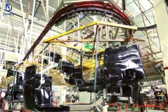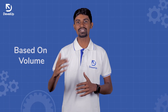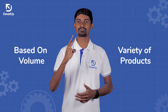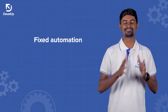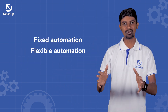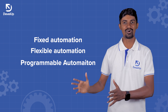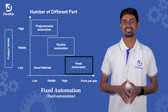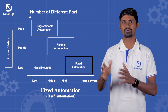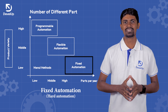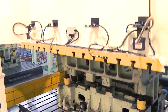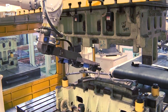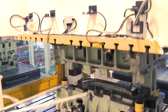The first type is Fixed Automation, then Flexible Automation, and Programmable Automation. Fixed Automation is also called hard automation. We can use it to produce a whole product or a variety of products in mass production.